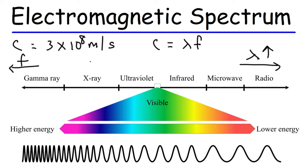As the frequency increases, the energy increases as well. Gamma rays have more energy than photons that are X-rays. Ultraviolet radiation has more energy than visible light. So you need to be able to compare these different forms of radiation in terms of their wavelength, energy, and frequency.